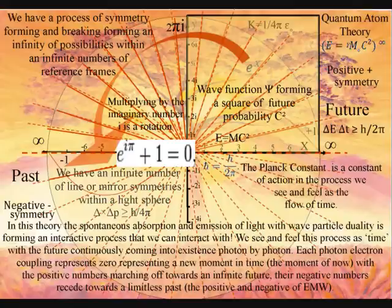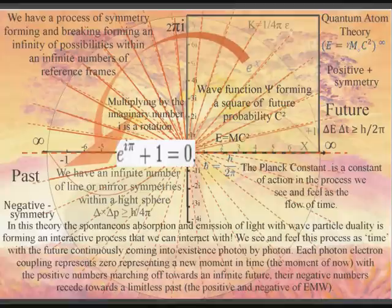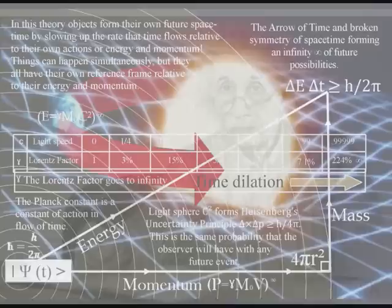This might sound far-fetched, but it is only extending Einstein's relativity to everyday objects and individuals. In the theory of general relativity, we have an interactive process. When an object moves, space-time moves relative to the energy and momentum of the object, therefore forming the curvature of space-time.